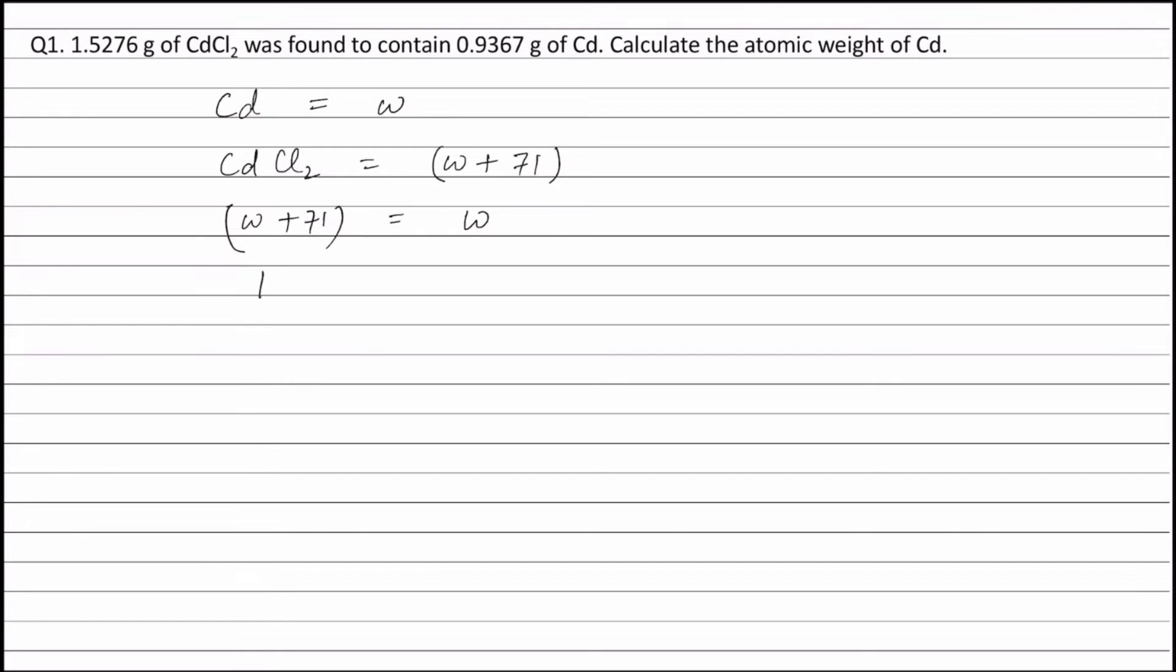1.5276 grams of cadmium chloride will contain W divided by W plus 71, multiplied by 1.5276 grams of cadmium.